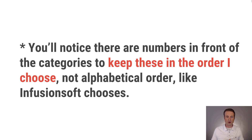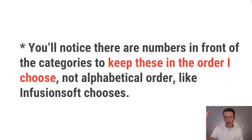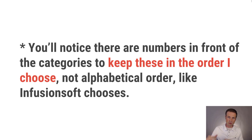You'll notice there are numbers in front of these categories. That's to keep the list clean, because Infusionsoft alphabetizes everything. Without numbers, it would alphabetize in the normal way. I created those tag categories ordered from most important to least important, at least the way I do things in my business. You may decide that membership is most important for you, so just keep that context in mind.